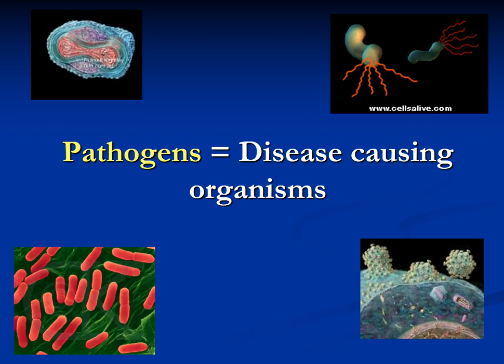This video is going to review pathogens. In the chapter in your book it's going to talk about what makes something alive. It's going to talk about cells and you're going to do that in the lab also. But what we're talking about now are pathogens — disease-causing organisms.